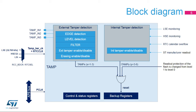Several internal features can generate a tamper event: LSE monitoring, HSE monitoring, RTC calendar overflow, and ST manufacturer readout. Each internal and external tamper has an enabled control bit. By default, internal tampers are enabled and external tampers are disabled. By default, all tamper detection events will erase the backup registers. External tamper events can be configured to not erase the backup registers.